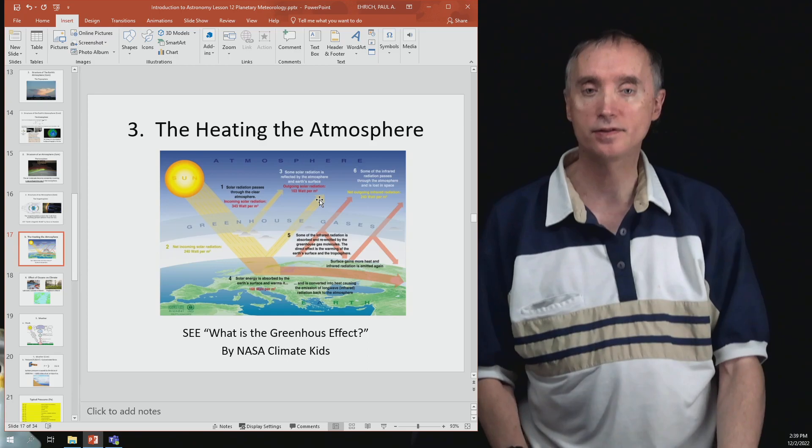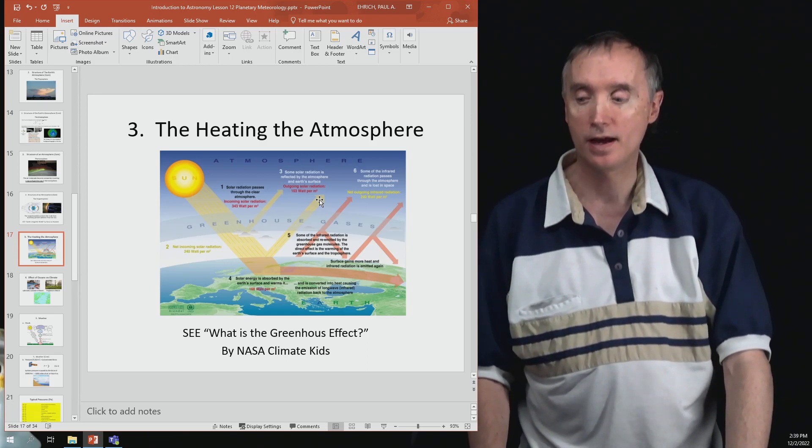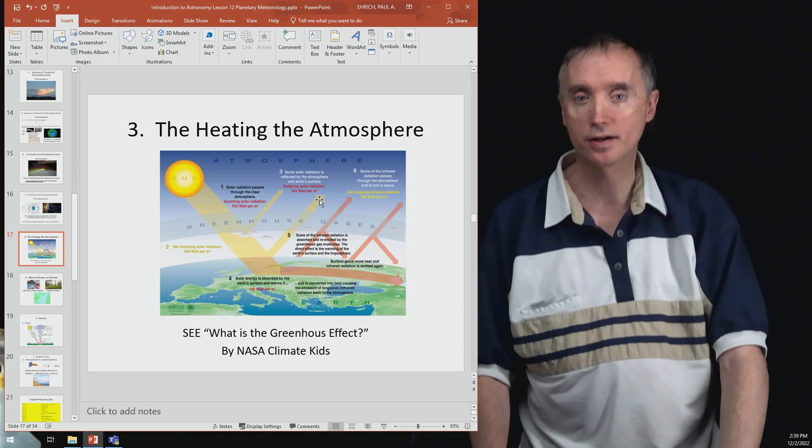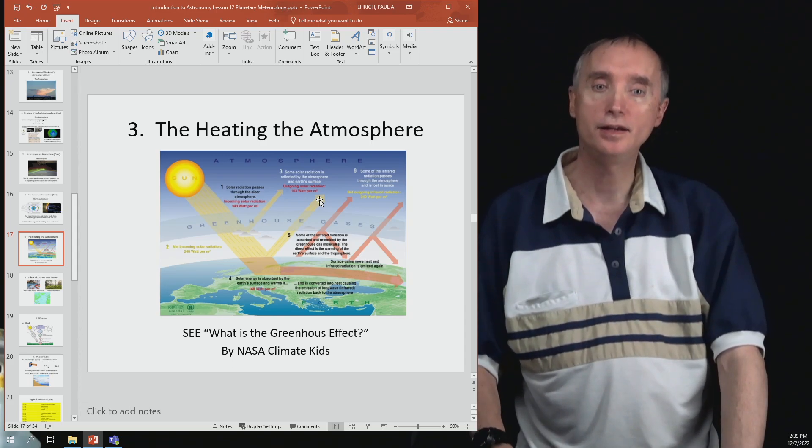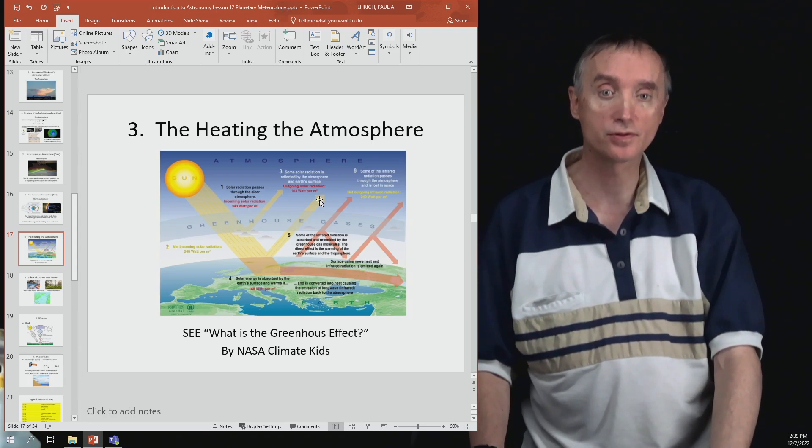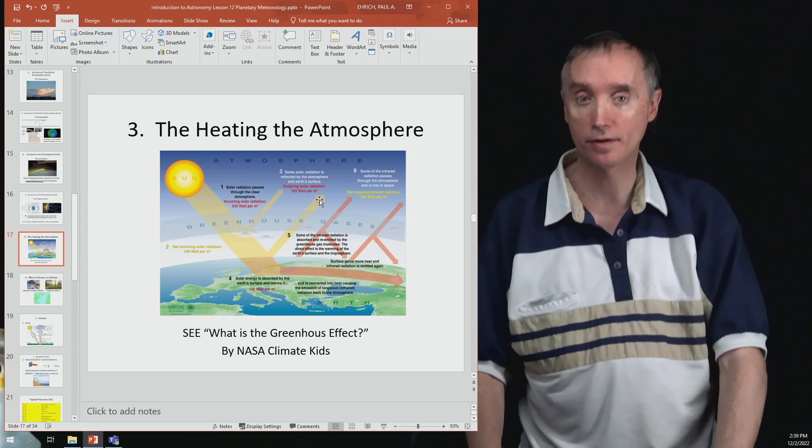First, you've got these things called greenhouse gases, and certainly CO2 is one of them. Carbon dioxide acts like a blanket that keeps the Earth warm. But there are other greenhouse gases like water and methane.